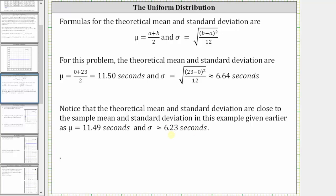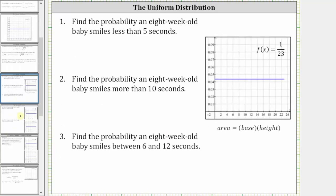And now let's find some probabilities using our example for the uniform distribution of the smile times of an eight-week-old baby. For number one, we're asked to find the probability an eight-week-old baby smiles less than five seconds.